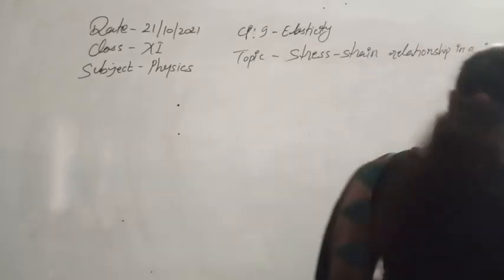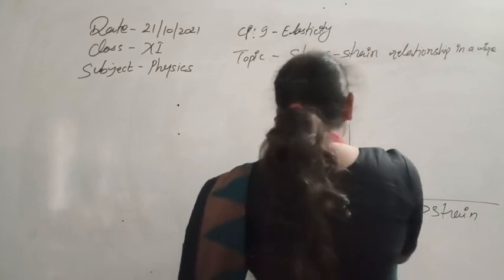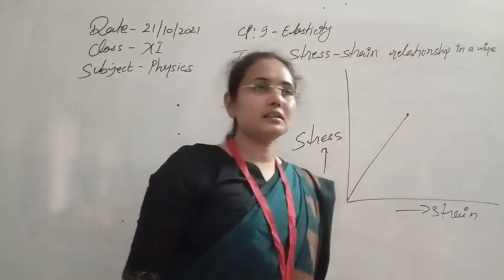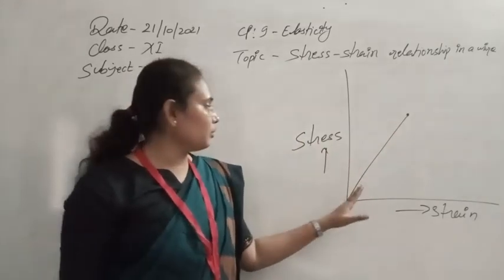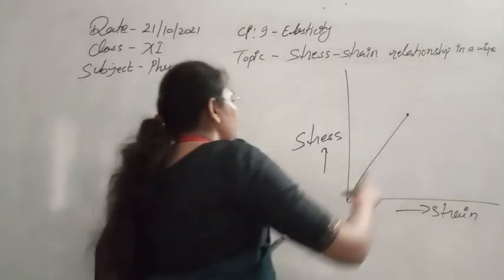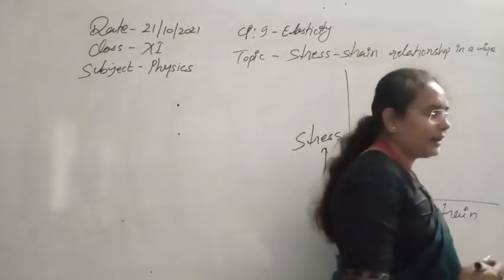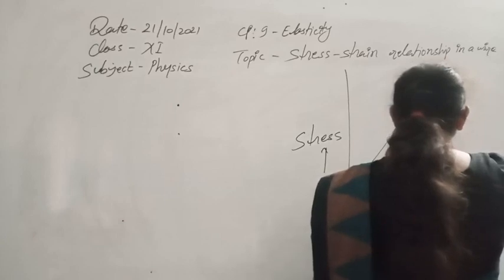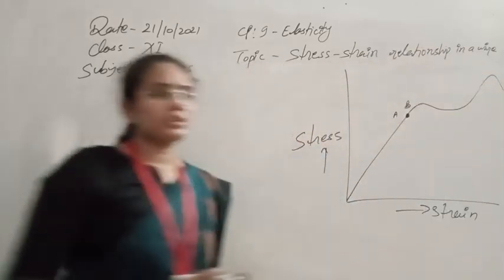On the graph, strain is plotted on the x-axis and stress on the y-axis. As we apply stress, first the wire behaves elastically — whenever we remove the deforming force, the wire can regain its original shape and size, obeying Hooke's law. This is the elastic behaviour of the wire. Beyond a certain point, the graph is no longer linear. After plotting the complete graph, we observe different named points: A, B, C, D, E, and F, each having its own physical meaning.